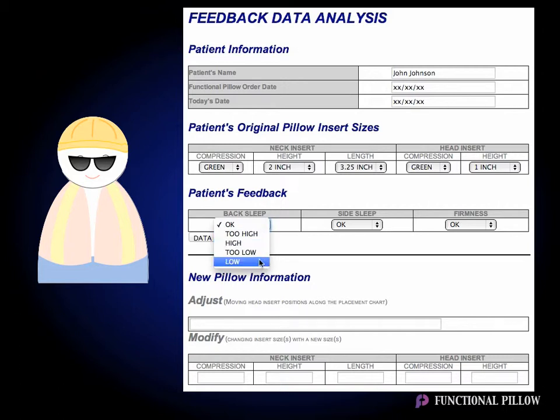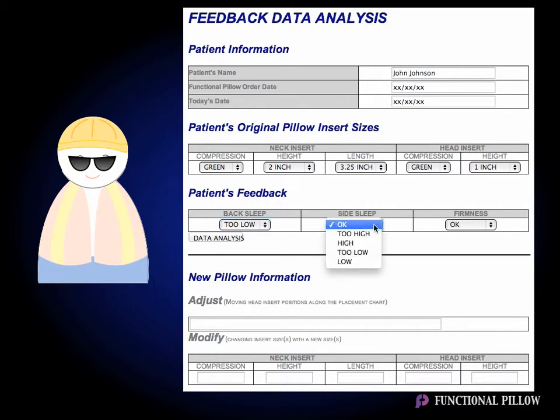In this case, we'll say that his pillow felt too low when he slept on his back. Then we'll ask John how he felt when he slept on his side. In this case, we'll say that it felt okay when he slept on his side.